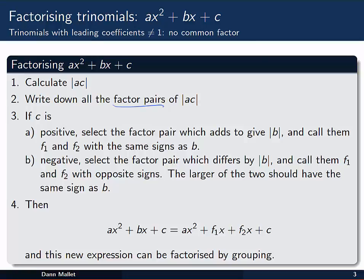Once we've done that, we have to figure out if c is positive or not. If c is positive, we select the factor pair from part 2 which adds up to give the absolute value of b. And we call those factors f₁ and f₂ and give them the same signs as b.